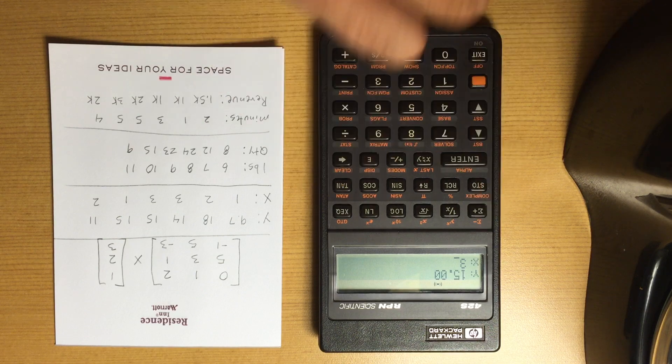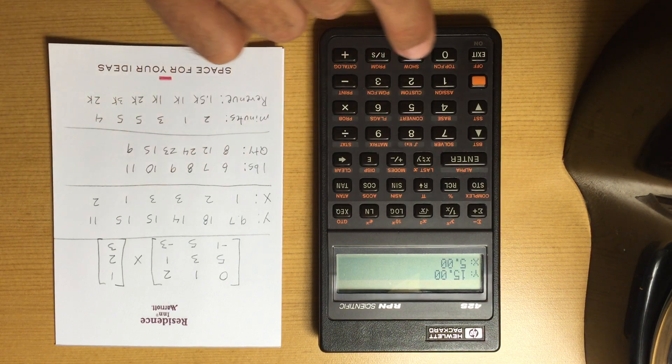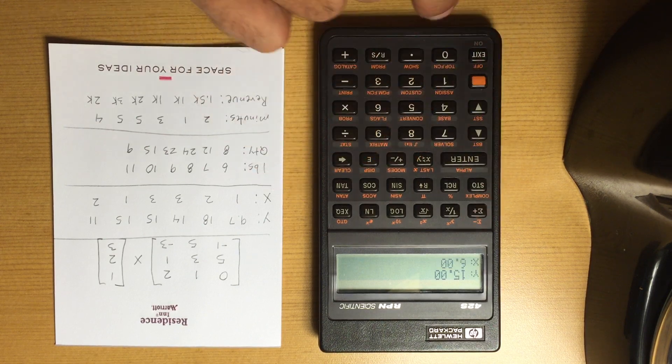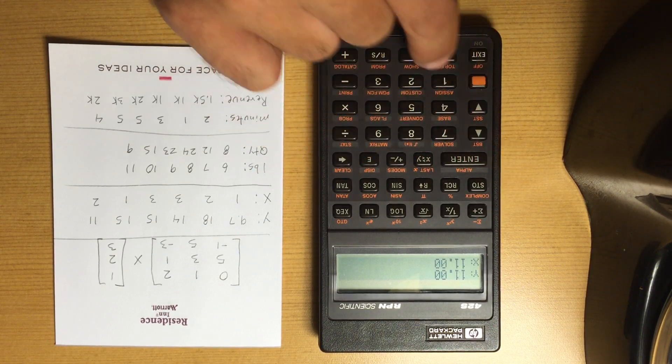So now we have five values: 15 and 1, and 11 and 11 and 2.